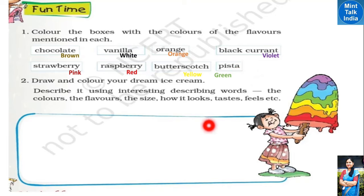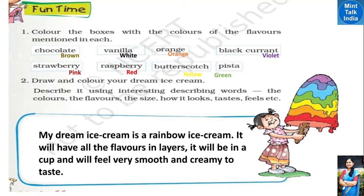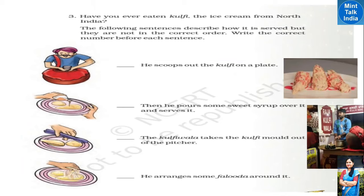Next is your creative drawing activity. Draw and color your dream ice cream and describe it using interesting describing words — what color it will be, what flavor, what size. For example: 'My dream ice cream is a rainbow ice cream. It will have all the flavors in layers, one after another. It will be in a cup and will feel very smooth and creamy to taste.' What about yours?